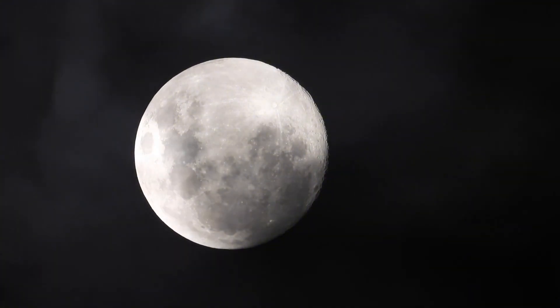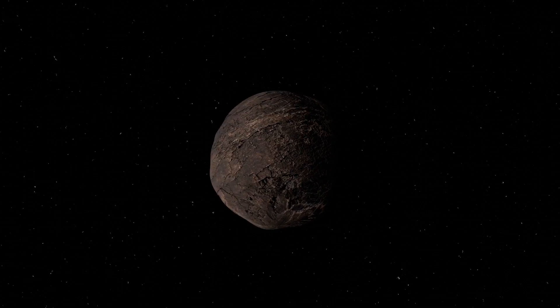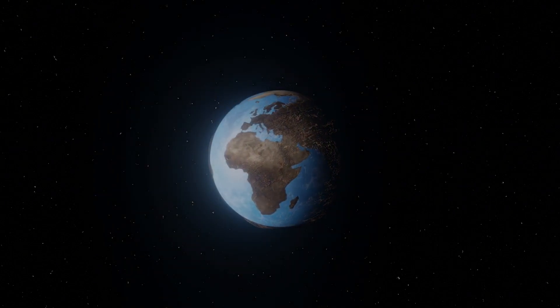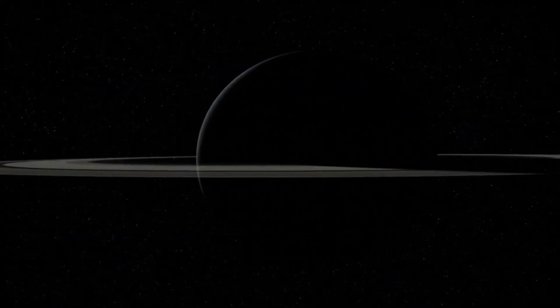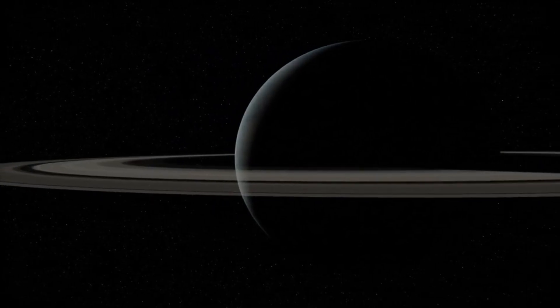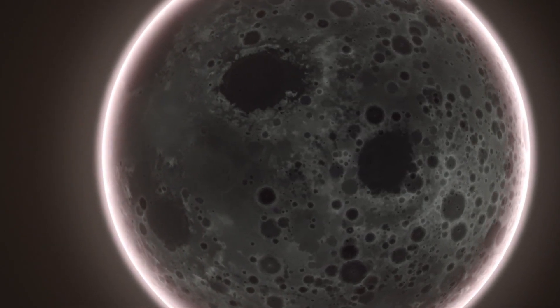The planet also receives 100 times as much high-energy radiation as Earth does, including X-rays and ultraviolet light, due to its proximity to Proxima Centauri. Proxima b is also bombarded with high-energy particles during star flare-ups. Unless it has a shielding magnetic field similar to Earth's, the conditions for life may not be favorable.